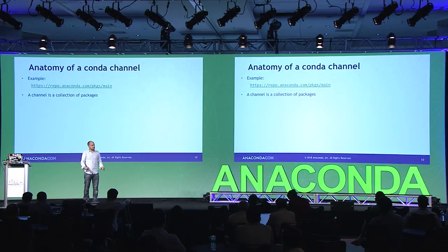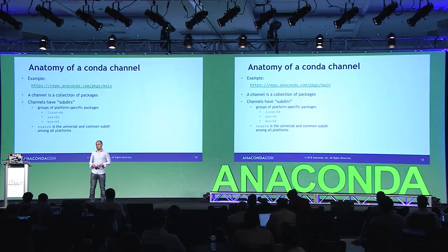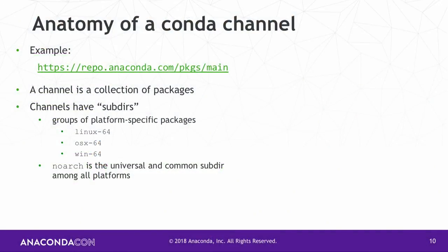Now a Conda channel. This is an example — our newest defaults channel URL. There ends up being a lot to a channel. One of the things channels have is subdirs — a technical word. These are things like linux-64, win-64, win-32, and there's also a noarch subdir. The noarch subdir is common for all subdirs — any platform-specific subdir will always fall back to noarch. That's actually how we detect that a URL is actually a channel or not. Each subdir has a repodata.json file, which is pretty important to how the solver works.